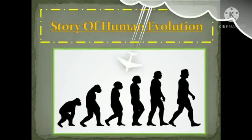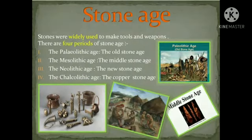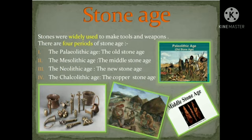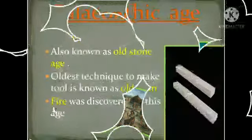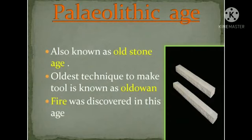Human evolution: the Stone Age. In this age, stones were widely used to make tools and weapons. There are four periods of the Stone Age: the Paleolithic age, the Mesolithic age, the Neolithic age, and the Chalcolithic age.